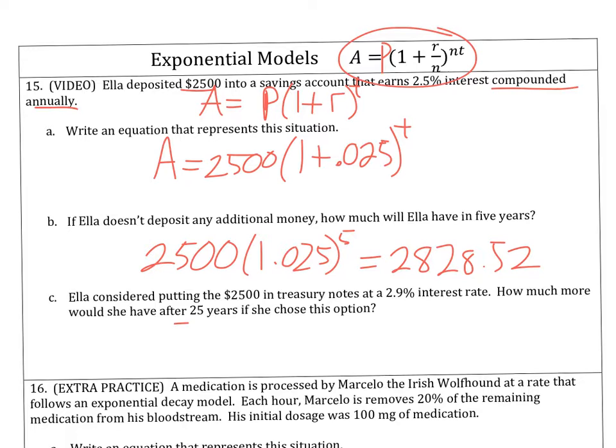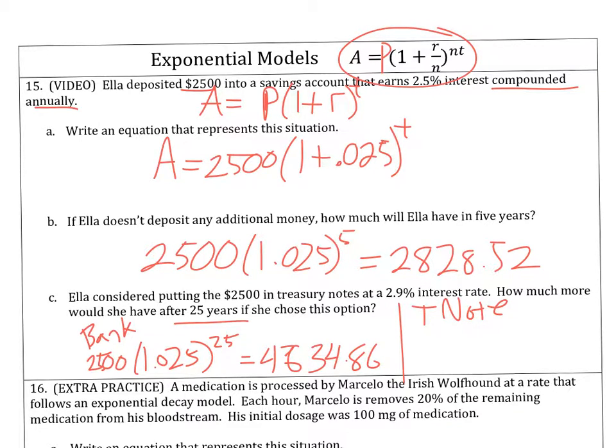The third part of this asks about 25 years and wants us to compare two different interest rates. So, at the bank, we're getting 2.5%. That's what we just did. So, $2,500 times 1.025 to the 25. And when I do that, we get $4,634.86. If I wanted to do the treasury note at 2.9%, we're looking at the same thing. Except $2,500 times 1.029, that's 2.9 instead of 2.5 to the 25. And when I do that, we get $5,108.86. So, that's about $500 more than she would have gotten otherwise.